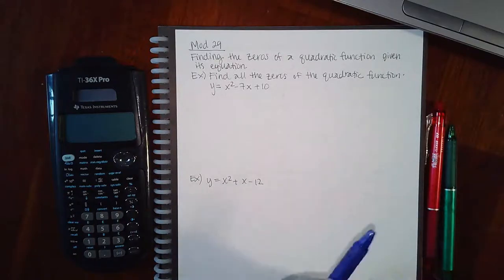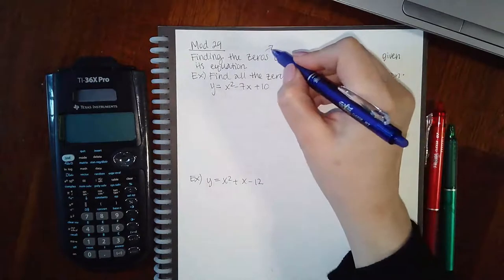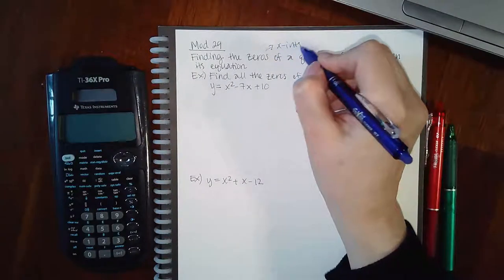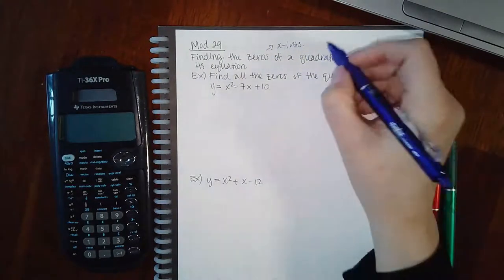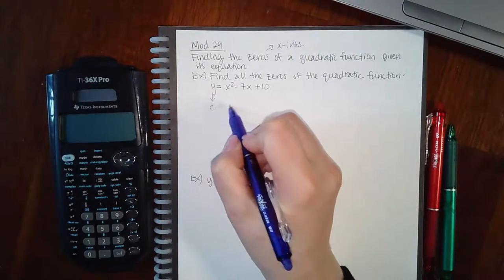This is module 29 and the first topic is finding the zeros of a quadratic function given its equation. In order for us to find the zeros, that's the same thing as finding the x-intercepts. How do you find your x-intercepts? You get them by taking your y-value and equaling it to zero.